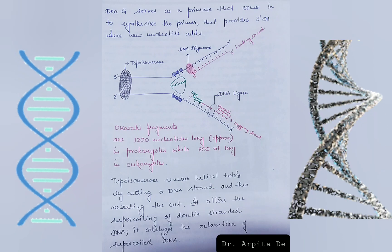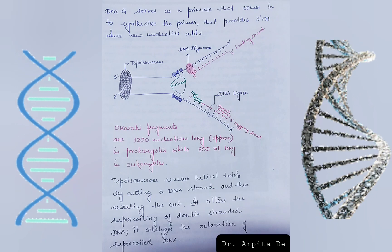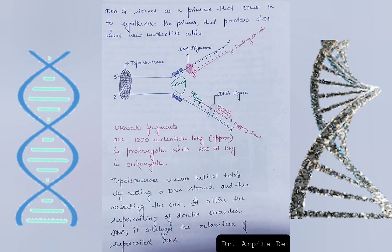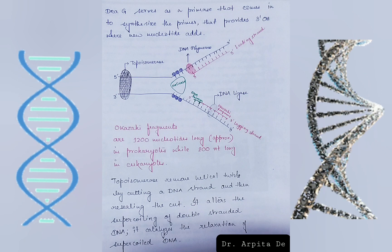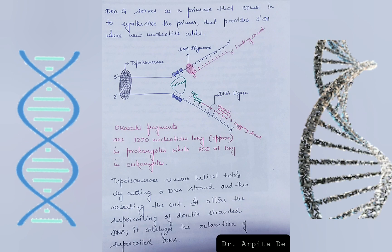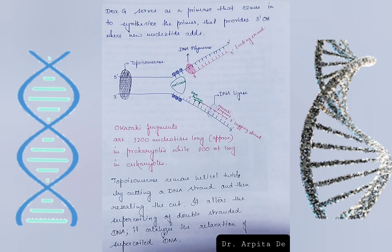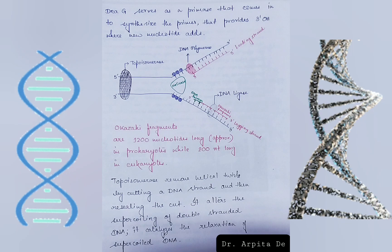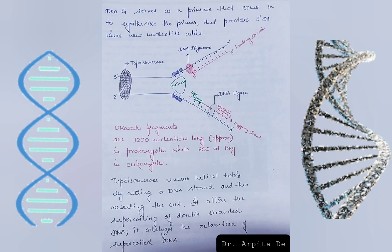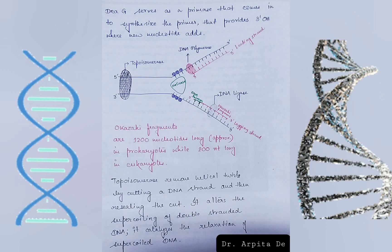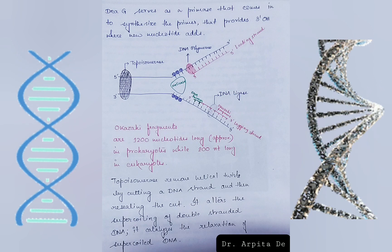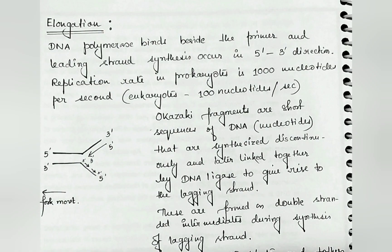Topoisomerase gets attached to the DNA and removes helical twists by cutting a DNA strand and then releasing the cut. It alters the supercoiling of double-stranded DNA and catalyzes the relaxation of supercoiled DNA. Coming to elongation, DNA polymerase binds beside the primer and leading strand synthesis occurs in the 5' to 3' direction.